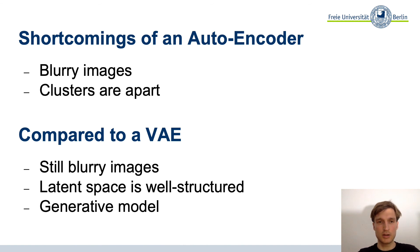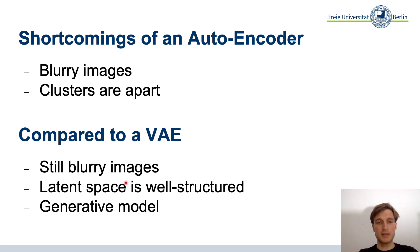Summarizing the shortcomings comparison: autoencoders have blurry images due to MSE loss, and clusters are far apart so you can't sample from them. Variational autoencoders still produce blurry images for the same reason — the reconstruction loss is similar to MSE — but the latent space is now well-structured, so we can use it as a generative model to sample new images.